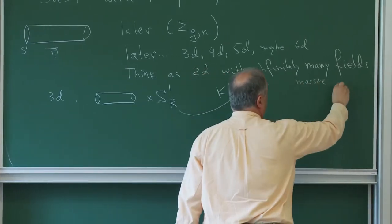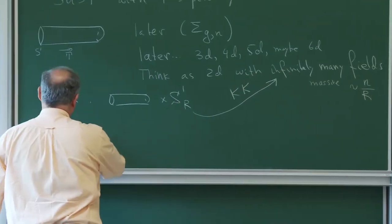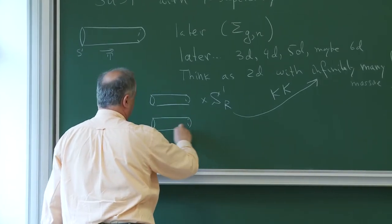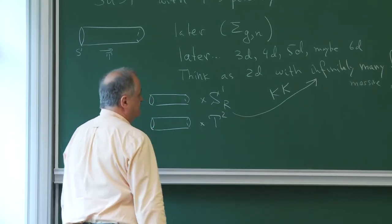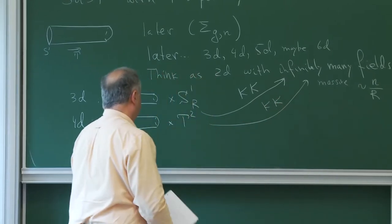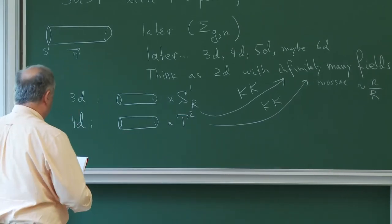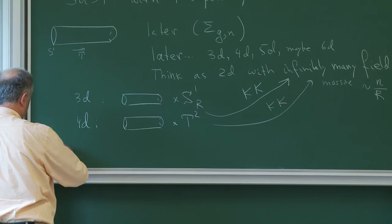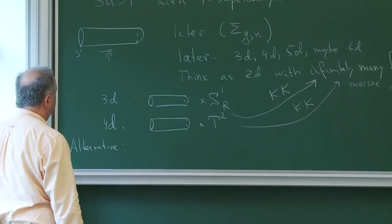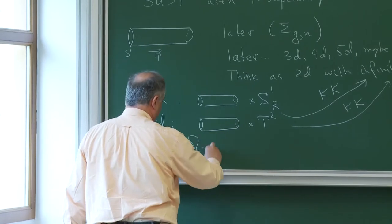Masses will be proportional to the Kaluza-Klein mode divided by radius. If you are in four dimensions, you can again think about four-dimensional theories as times two-torus. And again, Kaluza-Klein modes will give you infinitely many fields in this two-dimensional theory on a cylinder. But there is an alternative way of thinking about higher-dimensional theories as lower-dimensional, and this is achieved by the omega background.